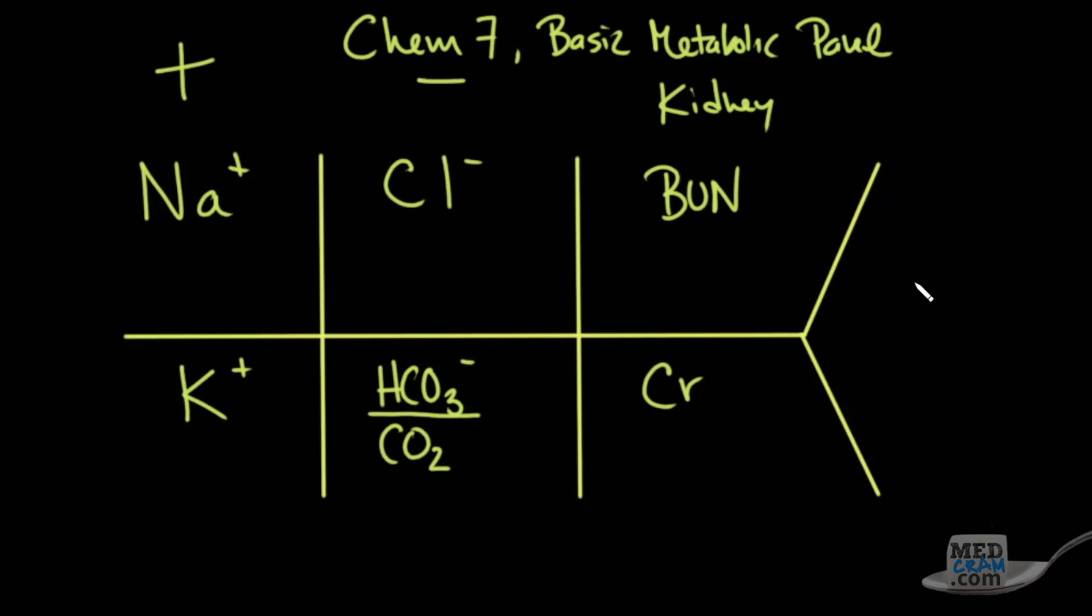And then here finally at the very end we have glucose. Now the units that these things are reported in, this first column is milliequivalents per liter, or another way of saying it is milliemoles per liter. And that goes for all of these here on the left-hand column.